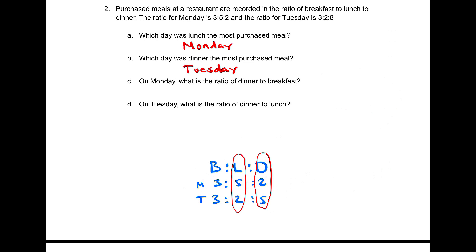On Monday, what is the ratio of dinner to breakfast? Dinner on Monday was 2, to breakfast on Monday which is 3. So the ratio was 2 to 3 — already simplified. On Tuesday, what is the ratio of dinner to lunch? Dinner on Tuesday is 5 and lunch is 2. That's already in simplified format, so we are done.